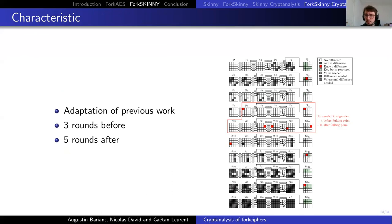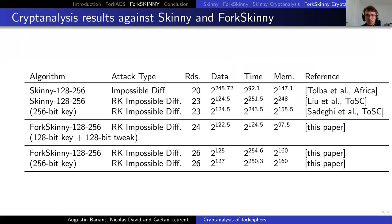Regarding the characteristic, we have our 18-round distinguisher, and then we have three rounds before and five rounds after. The construction of this is basically based on previous work. The characteristic is an adaptation of previous work. And this concludes our part for ForkSkinny. So we have our attack that achieved 26 rounds when we have 256 bits of key, and when we have 128 bits of key and 128 bits of tweak, we build an attack in the paper on 24 rounds.